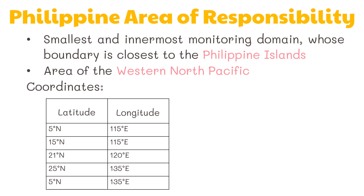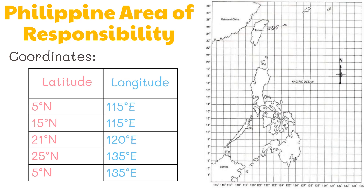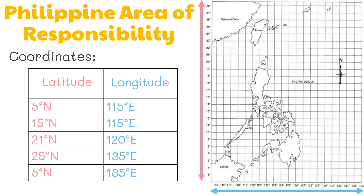Now what do these numbers mean? We have here a map of the Philippines. To know what these numbers mean we need to learn what latitude and longitude is. Latitude refers to the geographic coordinates that determine the distance of a point north to south of the equator. On the other hand, longitude refers to the geographic coordinates that determine the distance of a point east to west of the prime meridian. Now that we understand what these mean, we're ready to plot these coordinates.